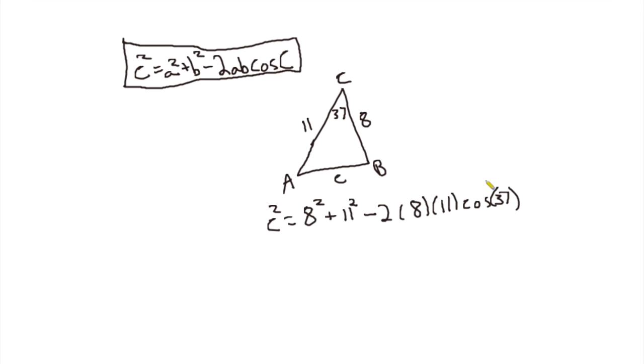All right, so now I just want to go ahead and plug in all my values. So c squared equals 64 plus 121 minus 2 times 8 times 11 is 176. So minus 176 cosine 37.